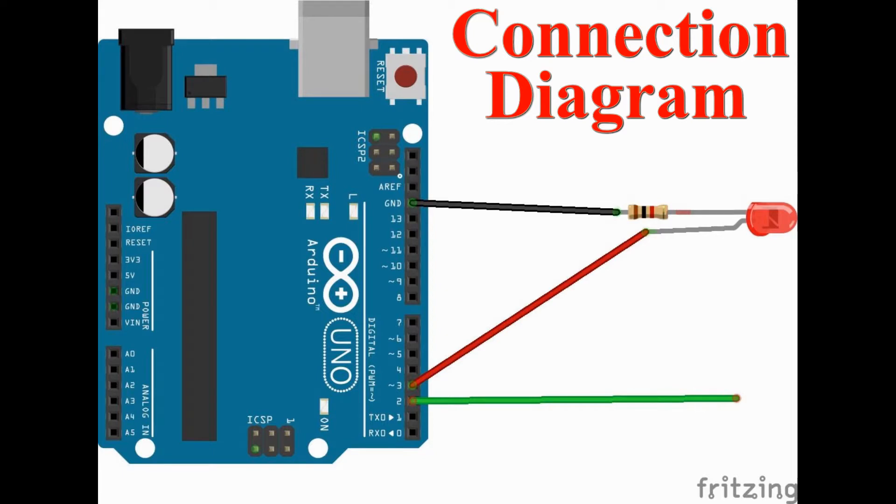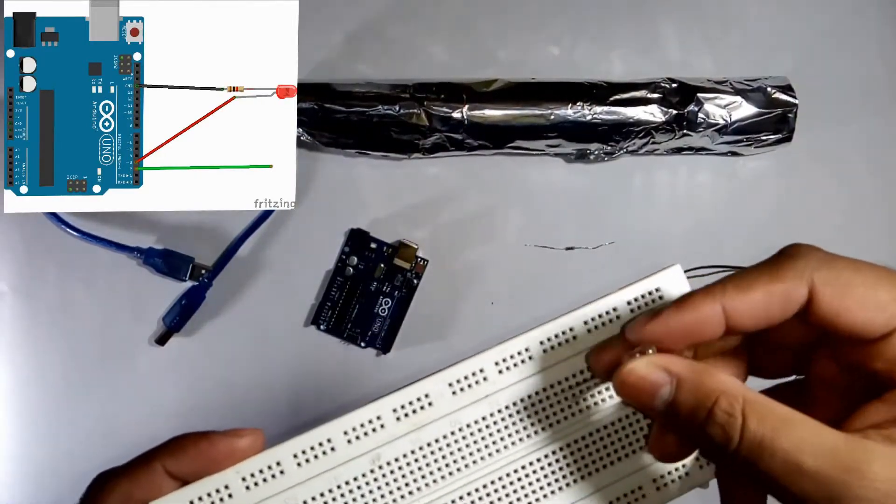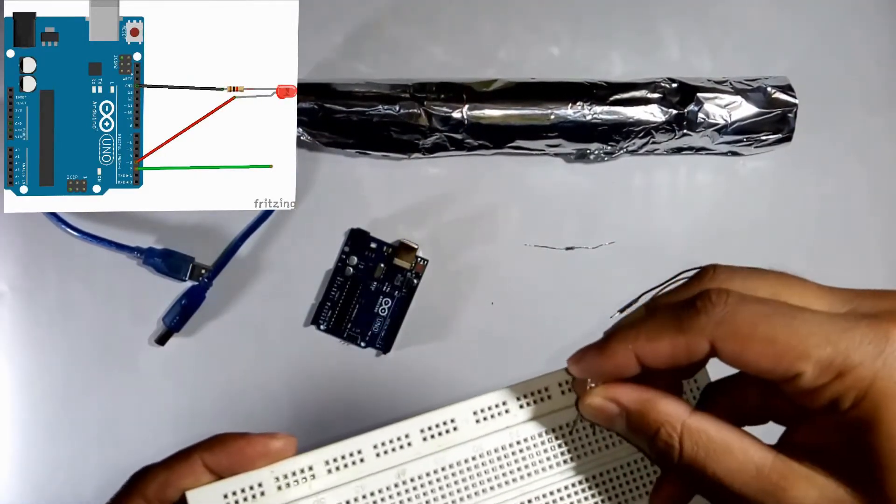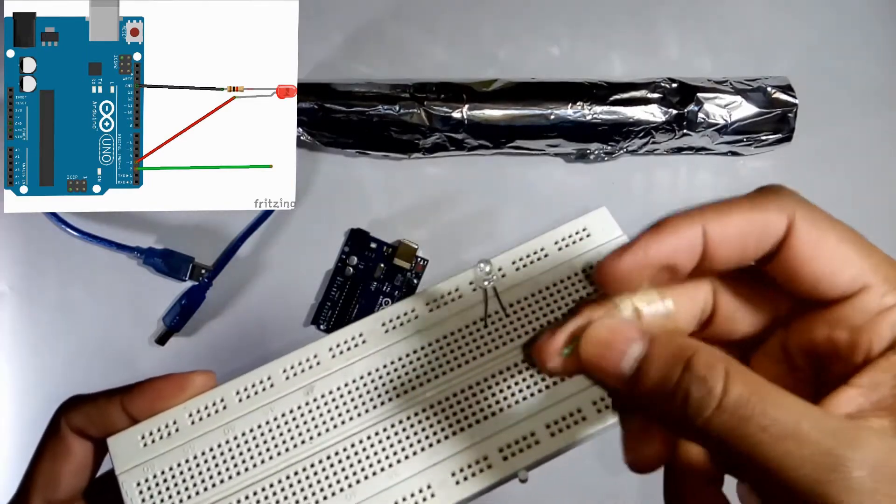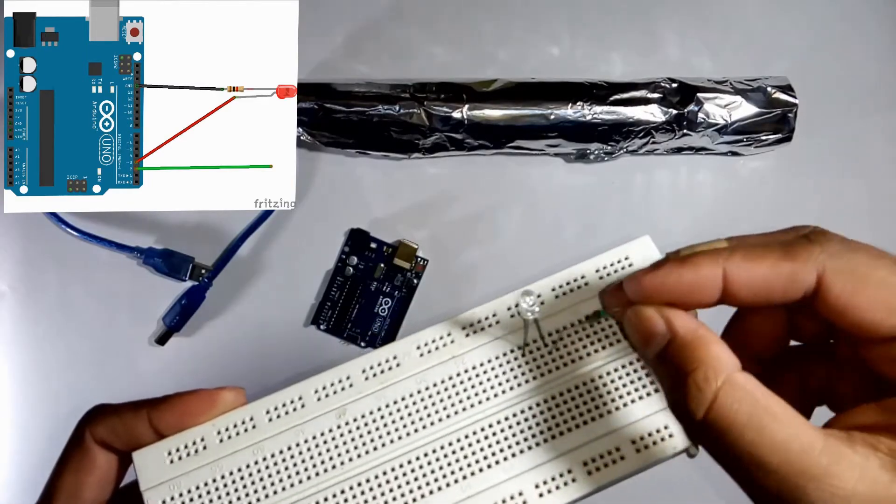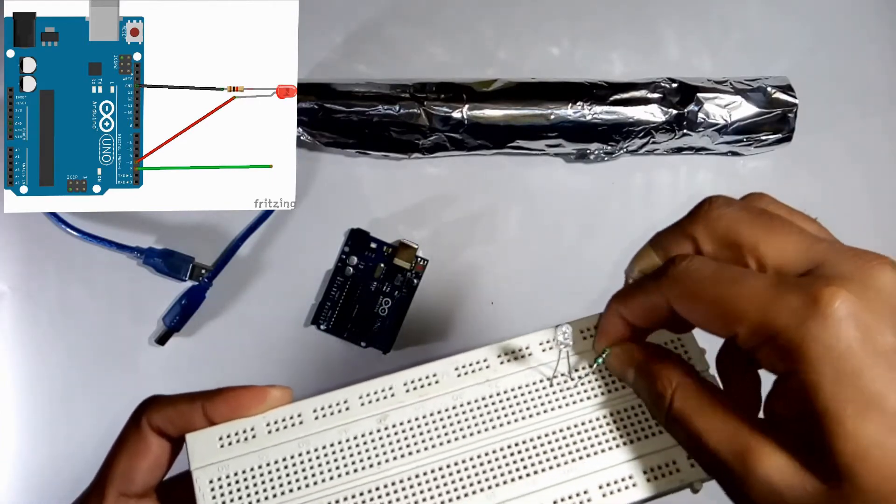Now all the components connect one by one like shown here. Take a breadboard and place LED on it. Okay, now see I am placing the LED and take a one kilo-ohm resistance which is connected to the negative terminal of the LED which protects our LED.